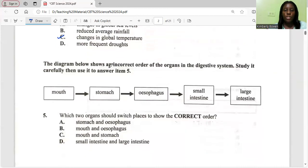The diagram below shows an incorrect order of the organs in the digestive system. Study it carefully then use it to answer item 5. This is the mouth, stomach, esophagus, small intestine, large intestine. Which two organs should switch places to show the correct order? That's the stomach and esophagus.